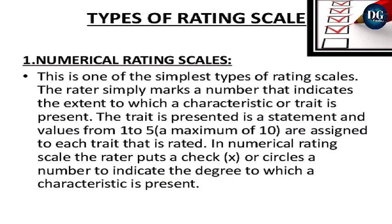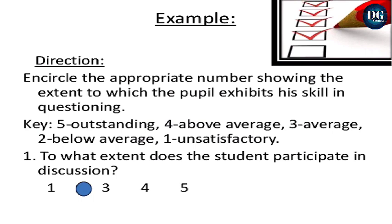There are four main types of rating scales. First is the Numerical Rating Scale — one of the simplest types. The rater marks a number indicating the extent to which a characteristic or trait is present. Values from 1 to 5 (maximum 10) are assigned to each trait. Example: 'To what extent does the student participate in discussion?' — 1 = unsatisfactory, 2 = below average, 3 = average, 4 = above average, 5 = outstanding.